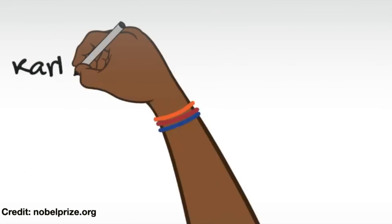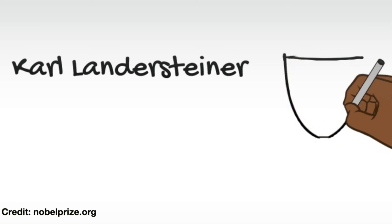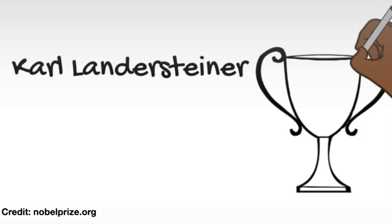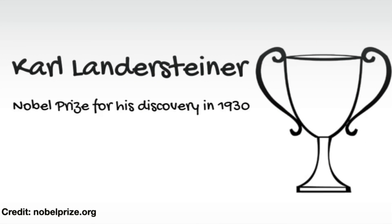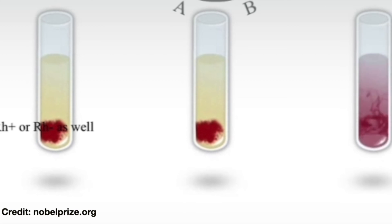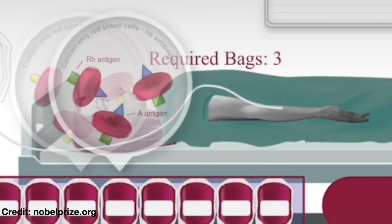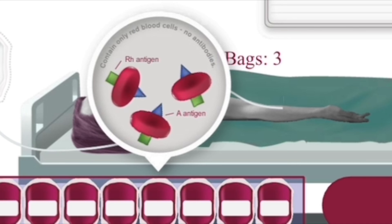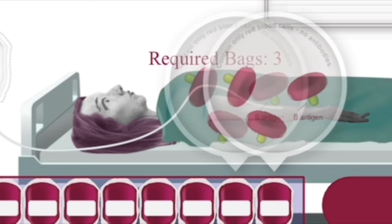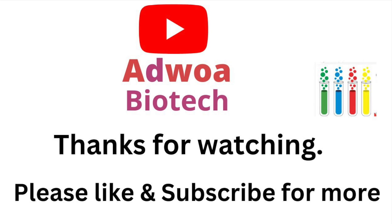Suffice it to say that Karl Landsteiner is the researcher most recognized for this type of work. He obsessively followed his curiosity around why some people could receive blood transfusions and thrive, while others succumbed or were not doing well. By following it, he was able to identify and categorize the different types and identify that it was these antigens on the surfaces of the red blood cell. But that's a totally different video in its own right. See you in the next video. God bless. Bye.